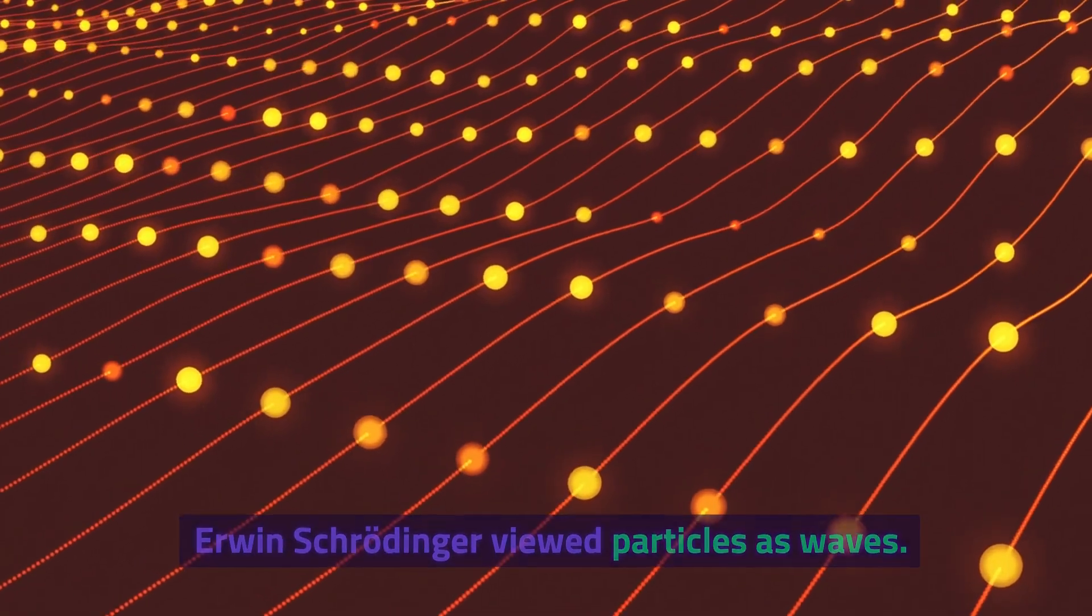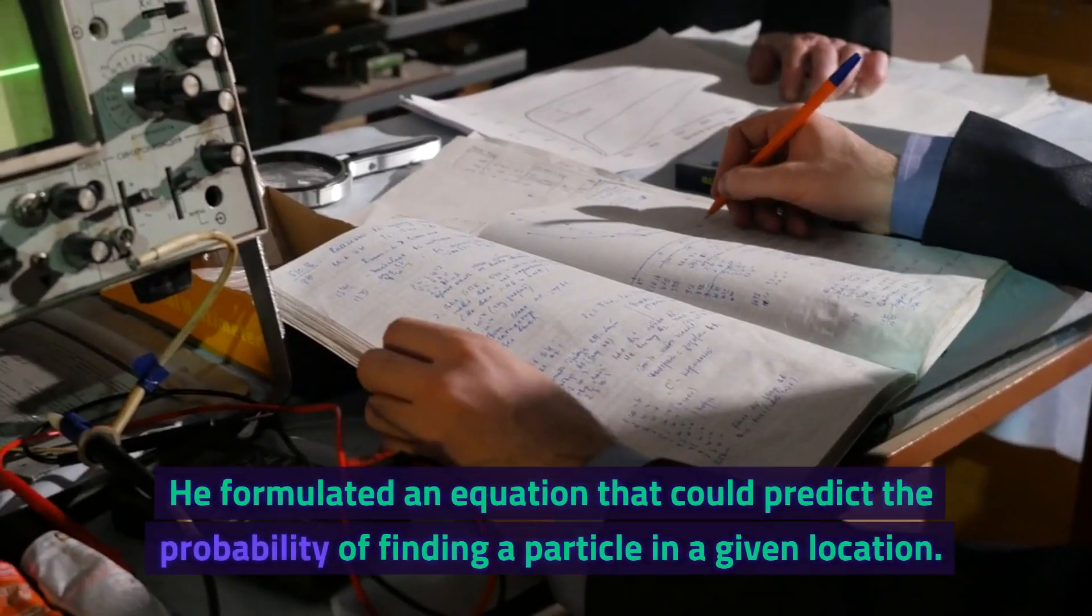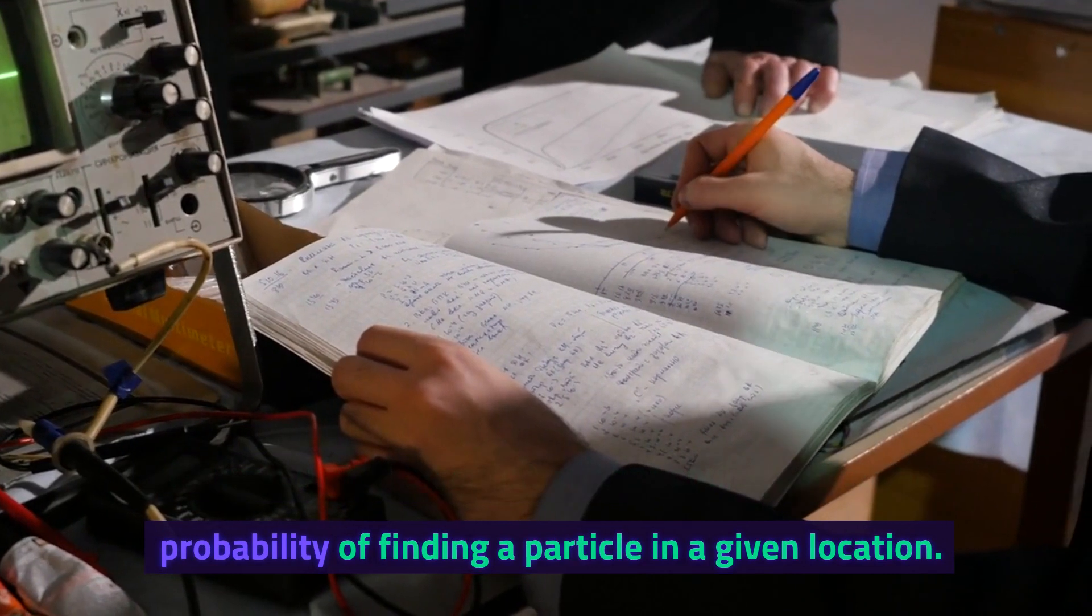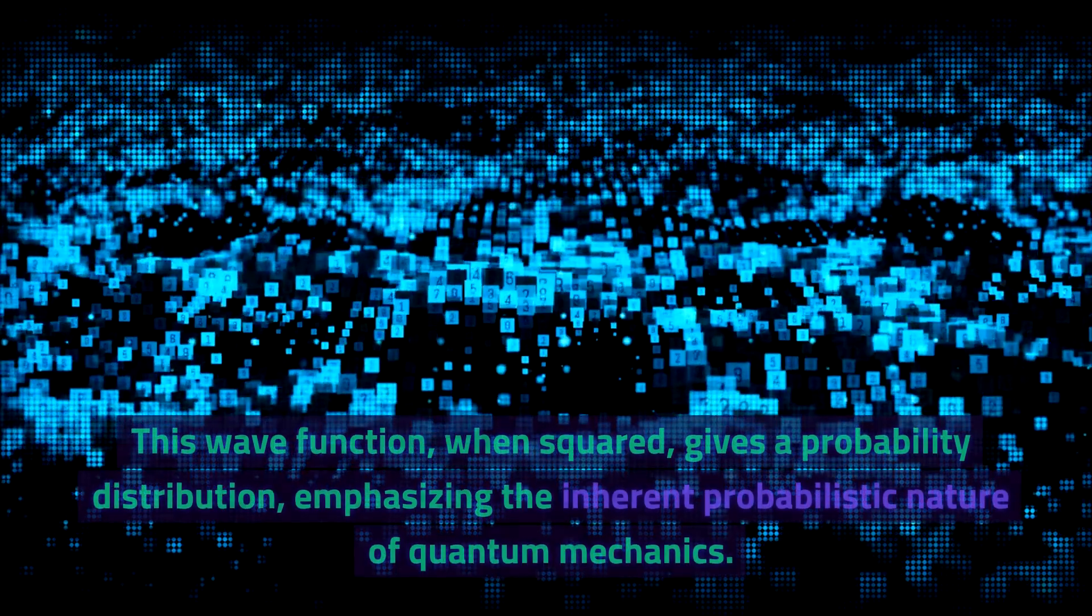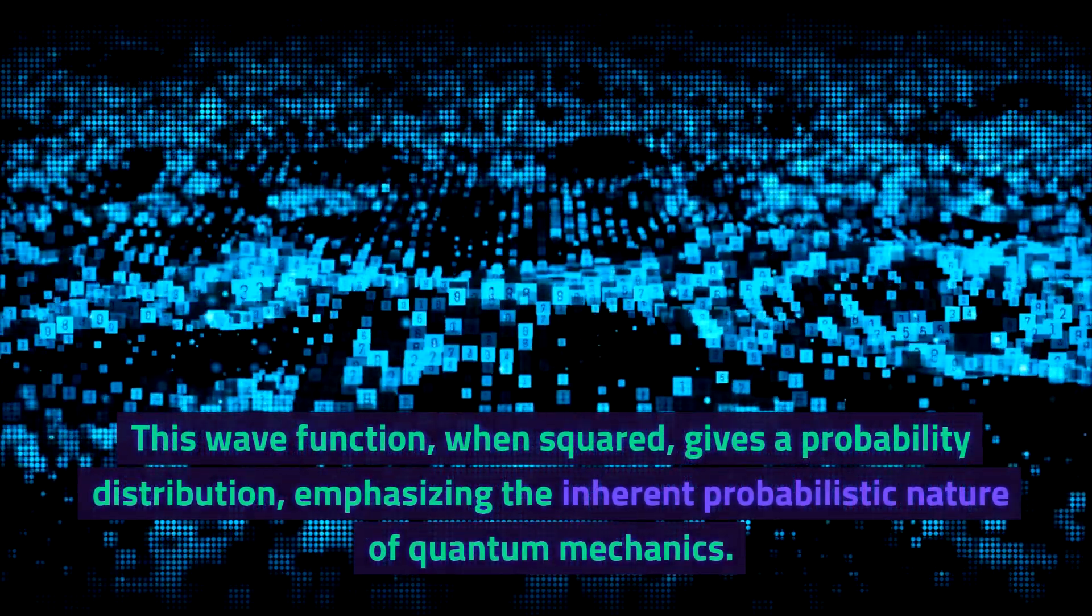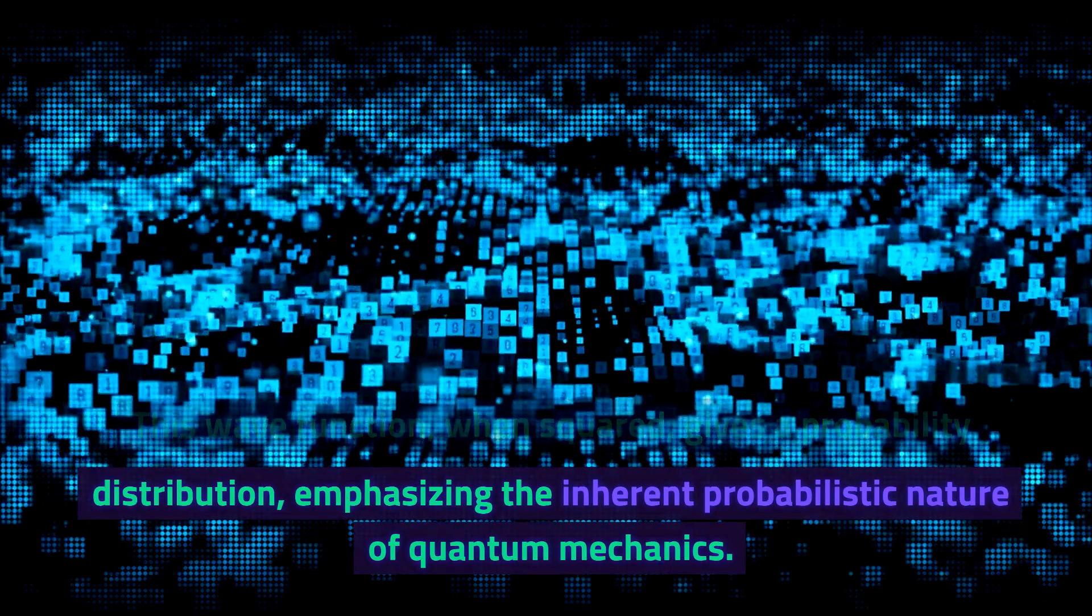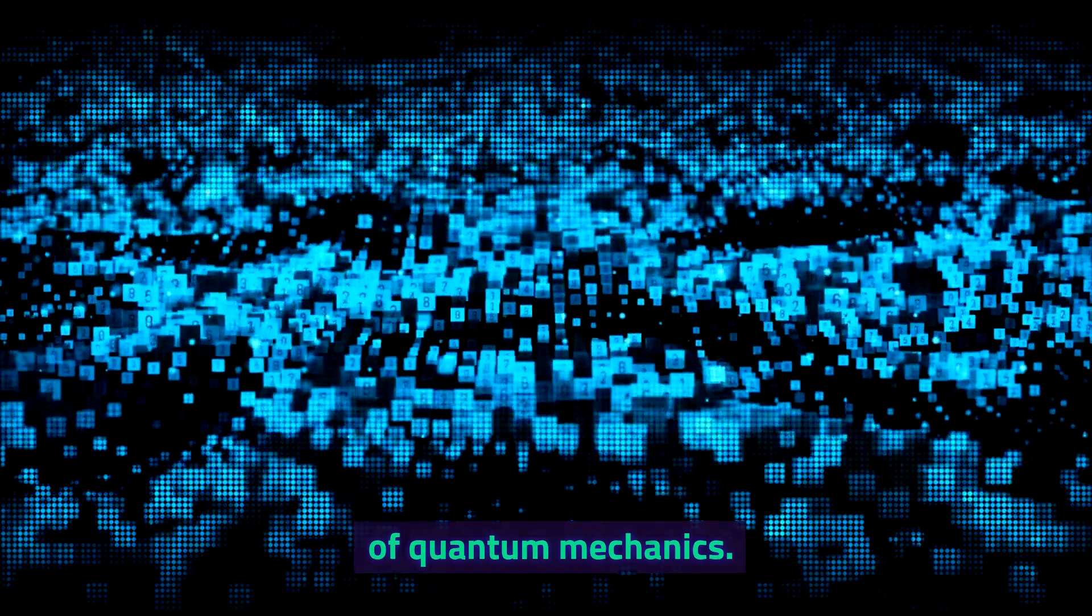Erwin Schrödinger viewed particles as waves. He formulated an equation that could predict the probability of finding a particle in a given location. This wave function, when squared, gives a probability distribution, emphasizing the inherent probabilistic nature of quantum mechanics.